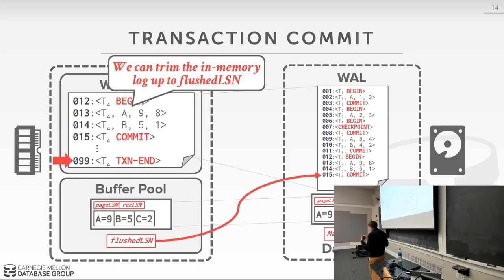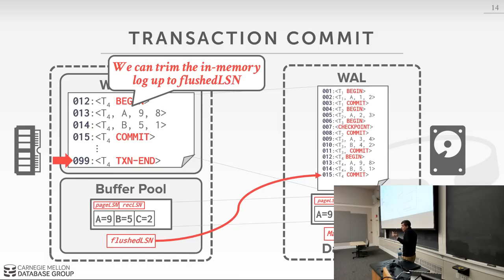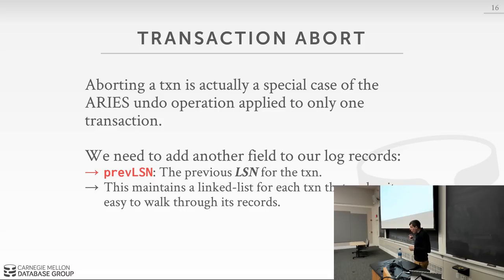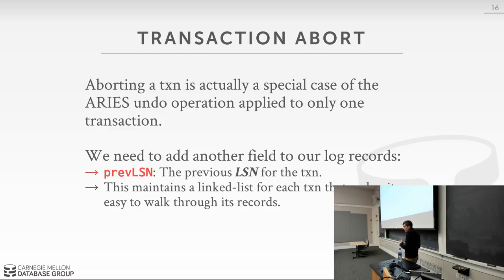In response to a question: it may be the case that a transaction is still running but a portion of its log has been written to disk because it got piggybacked on some other log write — and that's fine. If we crash or abort that transaction, we're going to log those aborts anyway. Just because a transaction aborted doesn't mean we can discard its write-ahead log records — we want to log everything even for aborted transactions.